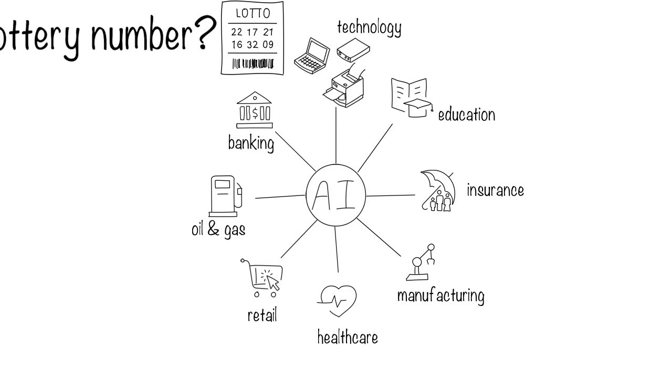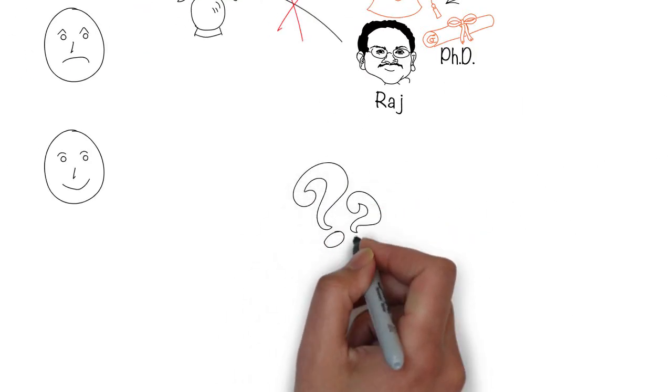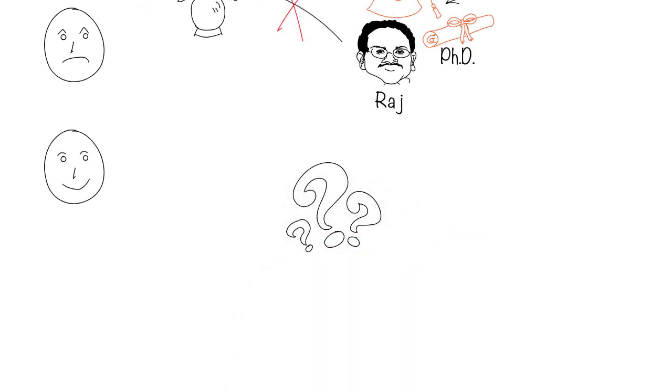So instead of trying to list all these applications, it's better to understand what type of problems can be solved by AI, because this helps us identify the problems in any industry that's a candidate for an AI-based solution.